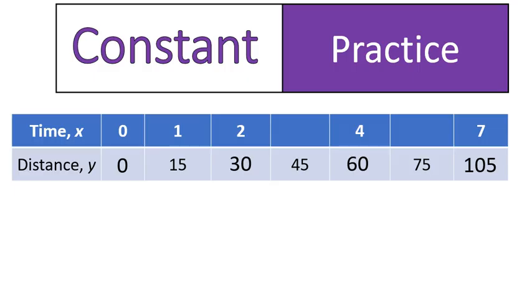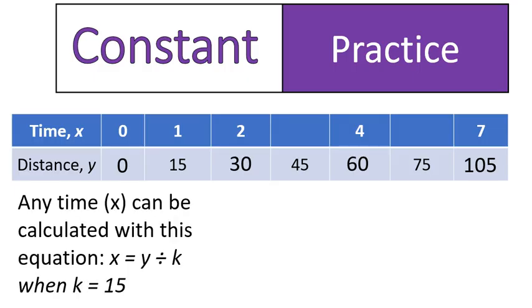Now we're going to do something and try and figure out the numbers in our x column. This is different. So any x value, in this case time, can be calculated using this equation. Our x value is y divided by k. And we know our constant k is equal to 15. So let's do it.